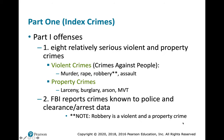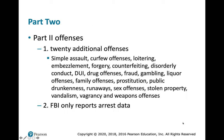The UCR has Part One — the index crimes just discussed — for which the FBI reports crimes known to the police, clearance data, and arrest data. Part Two offenses are 20 additional offenses including some sex offenses, prostitution, loitering, and others. For Part Two, only arrest data are reported.